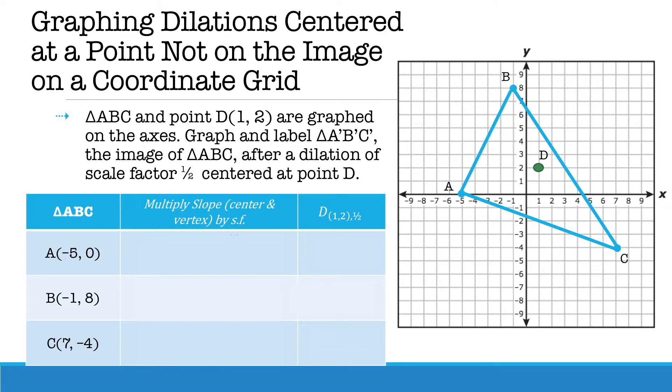Here you're going to start by counting your slope. From A to D we see there is a slope of 2 over 6. We're going to multiply your numerator and denominator by 1 half in order to give us a new slope which is 1 over 3. Since we started at A we are going to count up 1 and to the right 3 so A' would be the point (-2, 1).